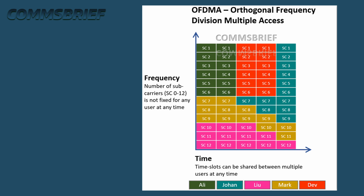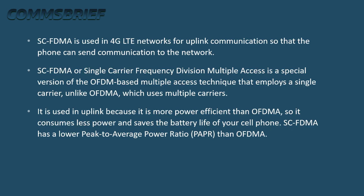SCFDMA is used in 4G LTE networks for uplink communication so that the phone can send data to the network. SCFDMA, or Single Carrier Frequency Division Multiple Access, is a special version of the OFDM-based multiple access technique that employs a single carrier, unlike OFDMA which uses multiple carriers. It is used in the uplink because it is more power efficient than OFDMA — it consumes less power and saves the battery life of your cell phone. SCFDMA has a lower Peak-to-Average Power Ratio, also known as PAPR, than OFDMA.